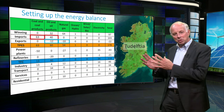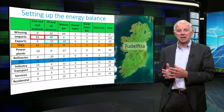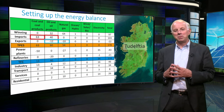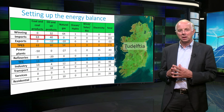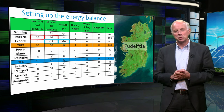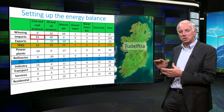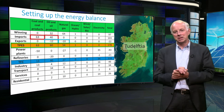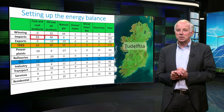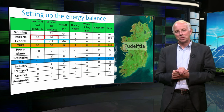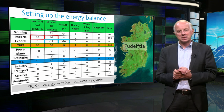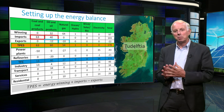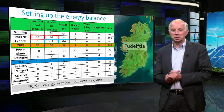As you can see, the exports have a negative sign, as the exports need to be subtracted from the energy available to Tudeltsia. When we sum up these energy flows, we get the Total Primary Energy Supply, or TPES. This is a common indicator for a country's total energy use. In an equation, TPES is defined as energy winning plus imports minus exports.